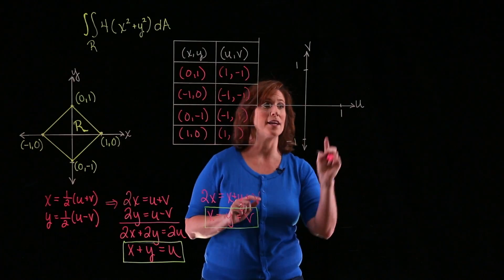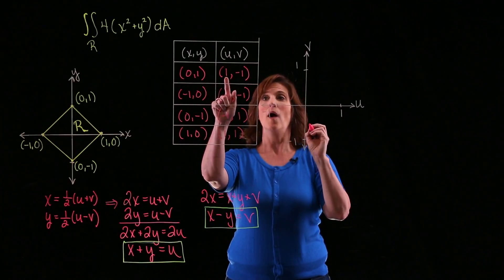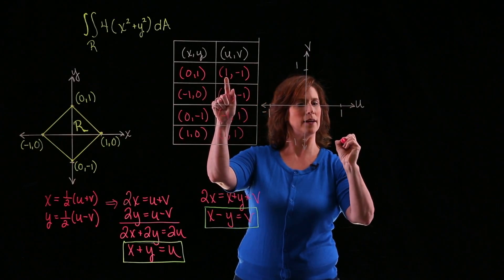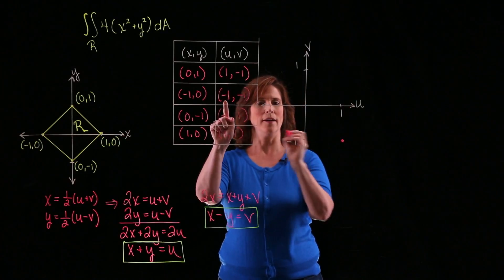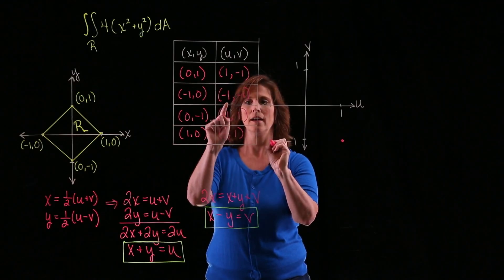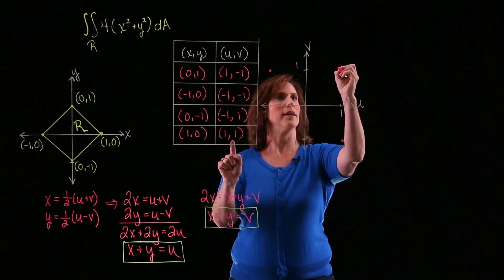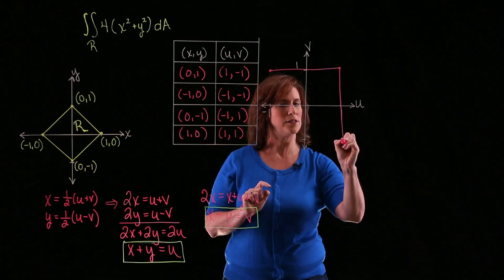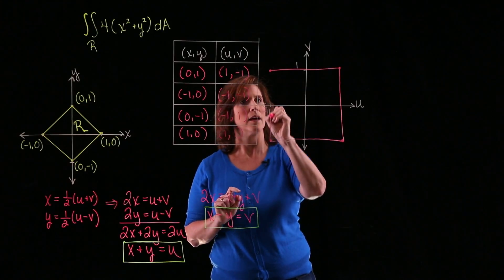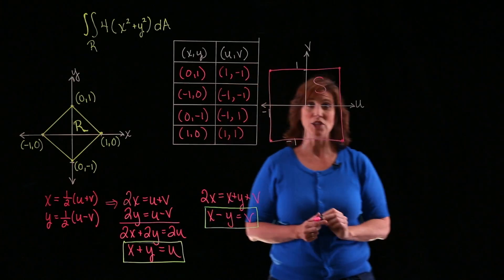Graphing these points on the uv-plane, I have (1,−1), (−1,−1), (−1,1), and (1,1). You can see that I'm going to have a square, and that's my image S.